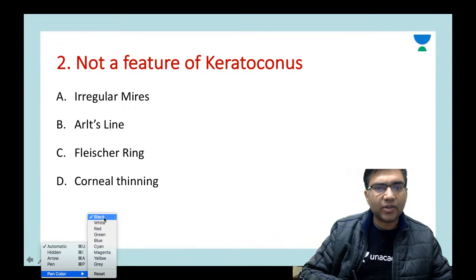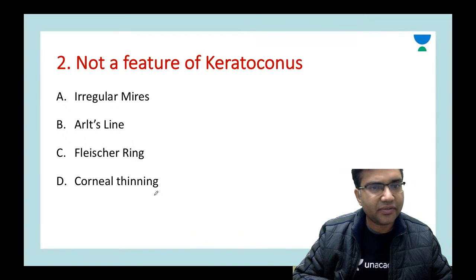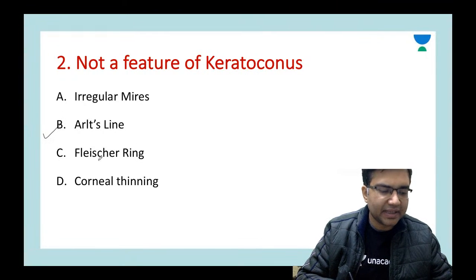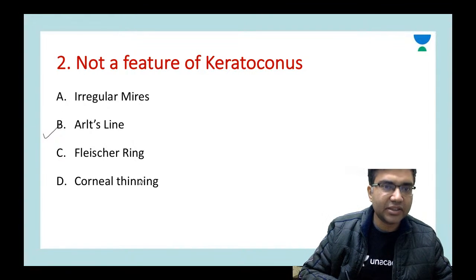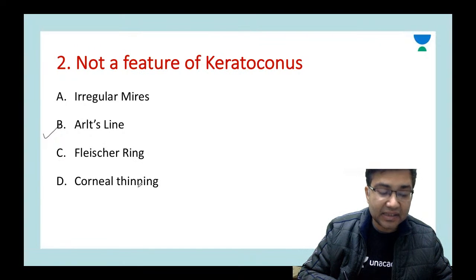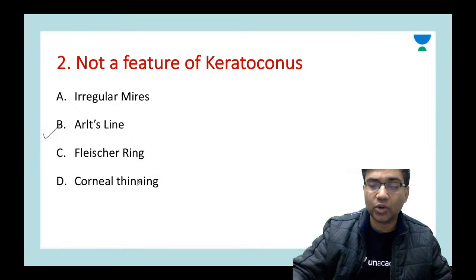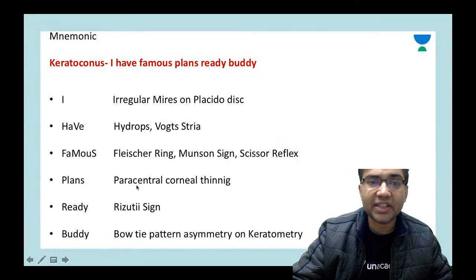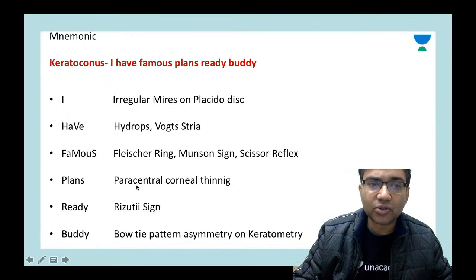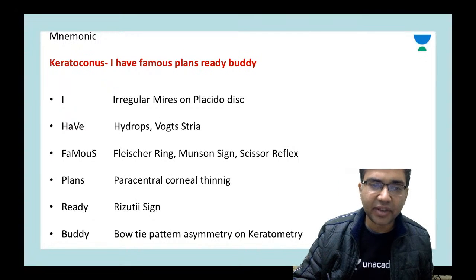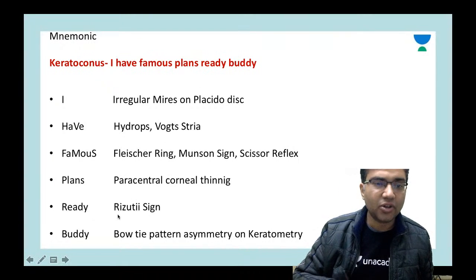The next question: which is NOT a feature of keratoconus? Options are irregular mires, Arlt's line, Fleischer ring, or corneal thinning. The answer is B — Arlt's line. Remember, Arlt's line is seen in trachoma, not keratoconus. For the various features of keratoconus, remember the mnemonic: 'I Have Famous Plans Ready Buddy'.